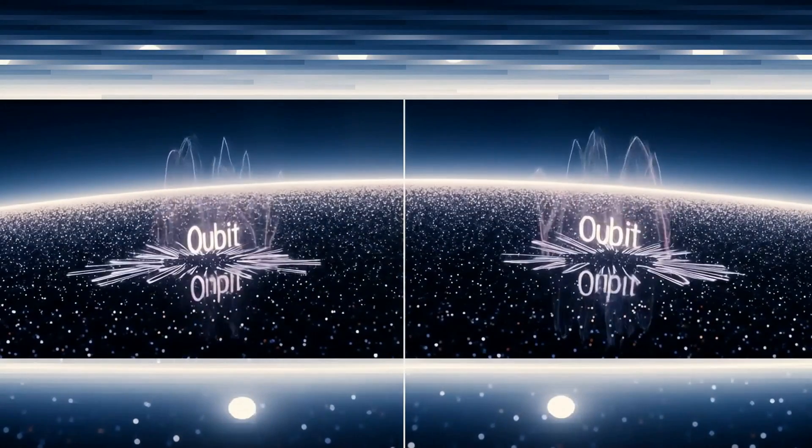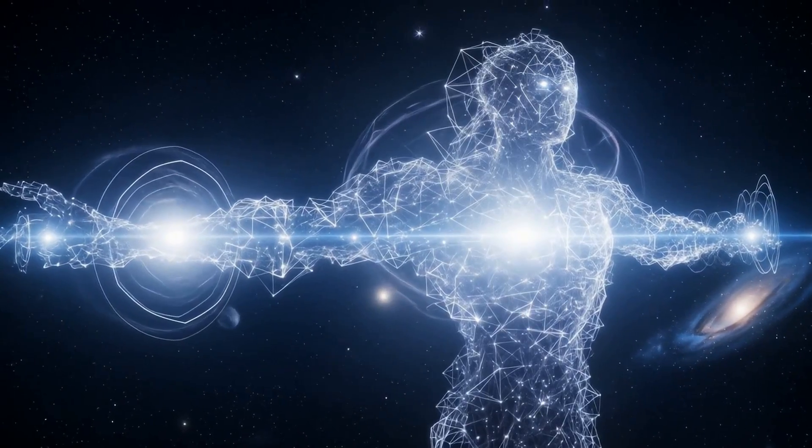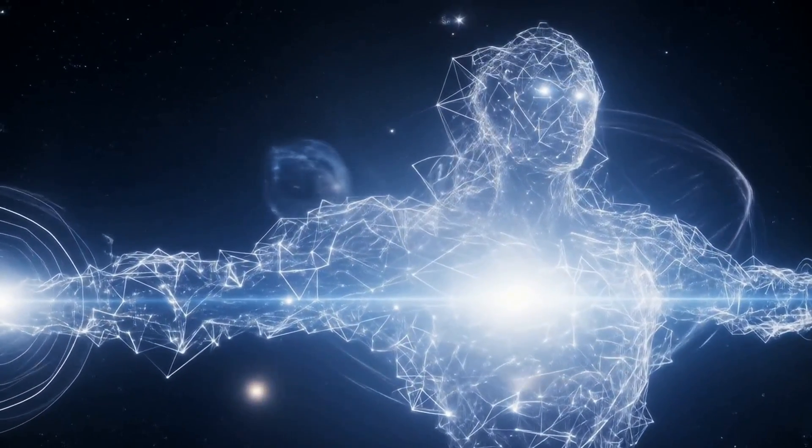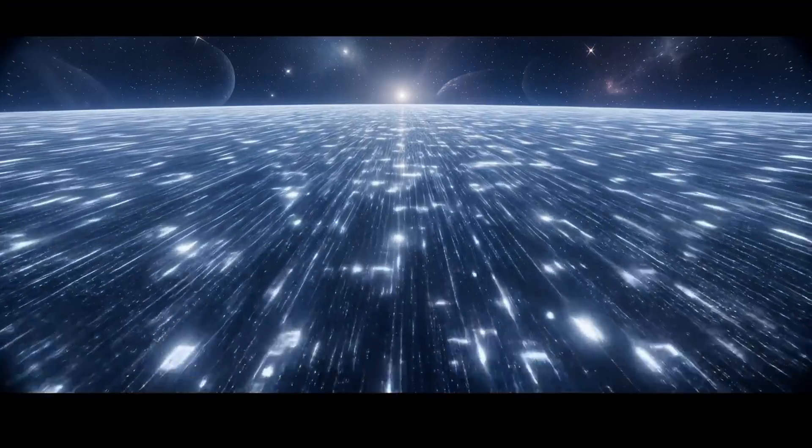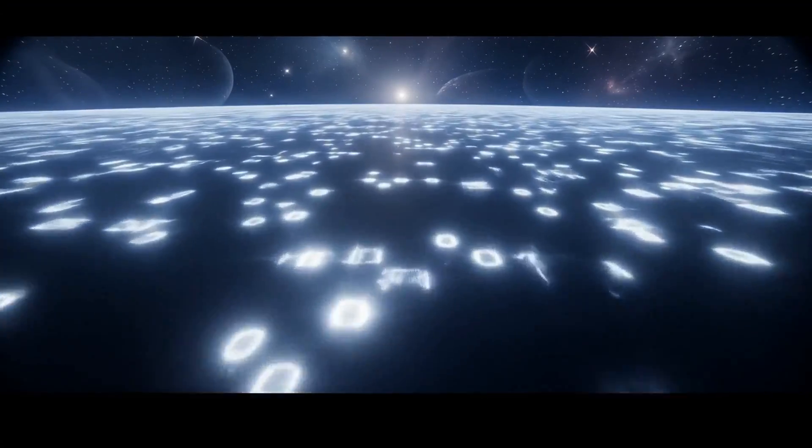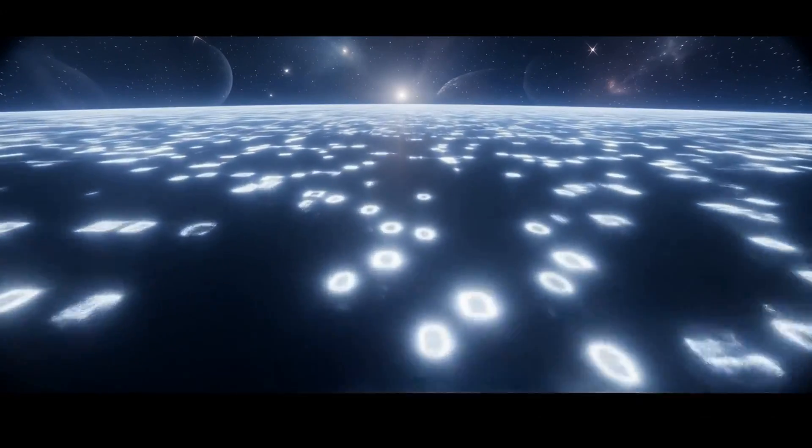You can think of it like countless laser pointers spinning inside the singularity, each representing a quantum state vector. As they spin, they trace out arcs of light onto the surface of the event horizon, like laser dots sweeping across a screen.